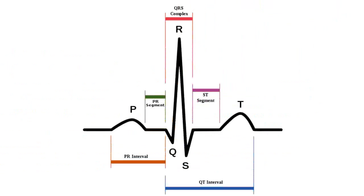Here are the basic deflections we see on an EKG. We have the P-wave, the QRS complex, as well as the T-wave. The P-wave represents atrial depolarization, the QRS complex represents ventricular depolarization, and the T-wave represents ventricular repolarization.